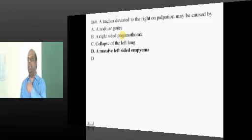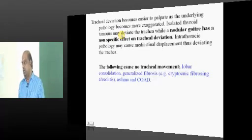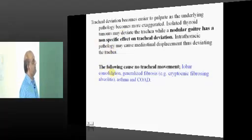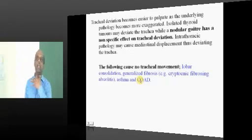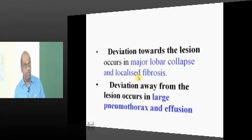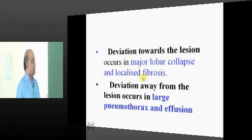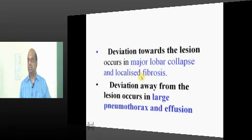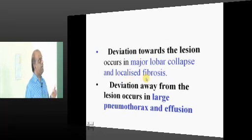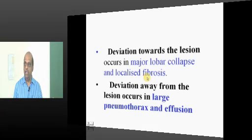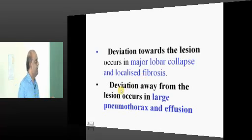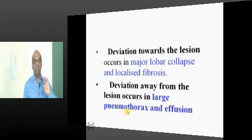Regarding tracheal deviation and its clinical significance: in lobar consolidation, generalized fibrosis, or asthma, there is no tracheal deviation. Lobar collapse or localized fibrosis causes ipsilateral deviation — toward that side. Pneumothorax or effusion will push the trachea contralaterally.